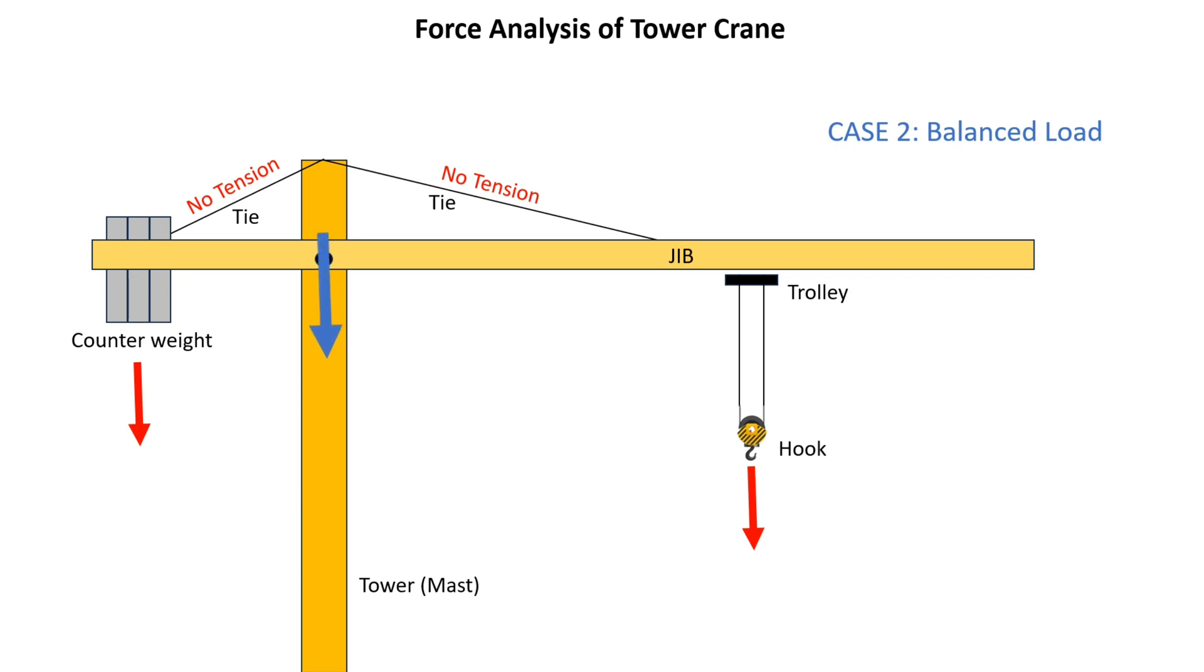Case 3: Heavy load lift. This case is similar to case 1, but the difference is only the direction of bending moment transfer. When we lift heavy weight on the hook, the resultant bending moment acting on the tower is in the clockwise direction.